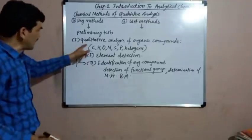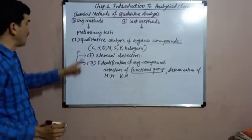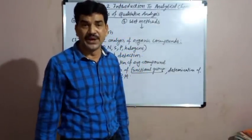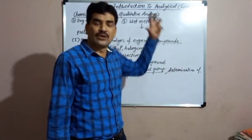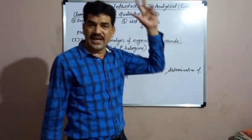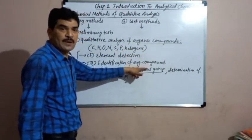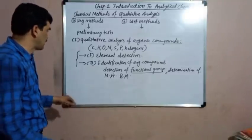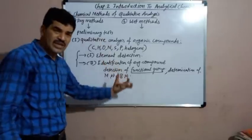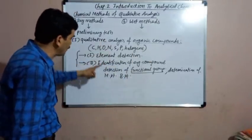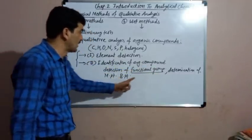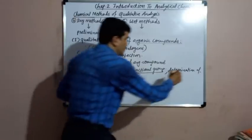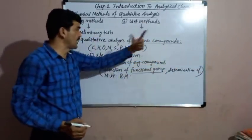So in the qualitative analysis of any organic compound, first we perform element detection — finding which elements such as carbon, nitrogen, oxygen, or sulfur are present. Then we identify which organic compound is present by detecting the functional group and determining the melting point and boiling point. These are the various steps by which we can identify the organic compound in the given sample.